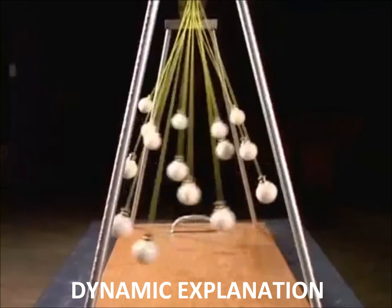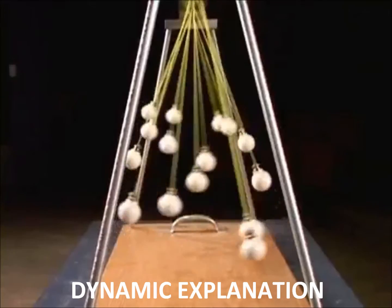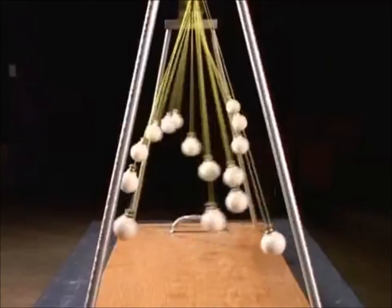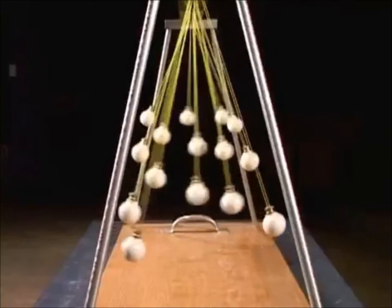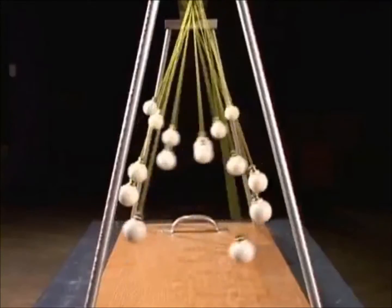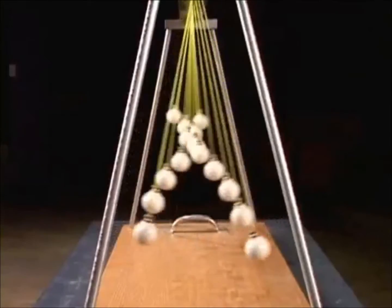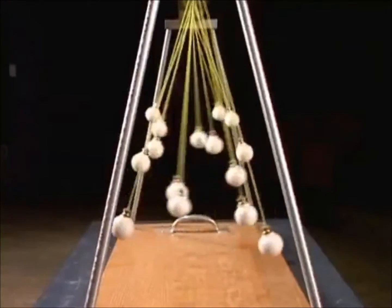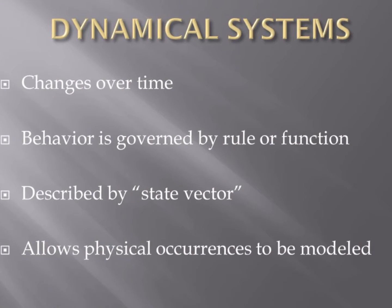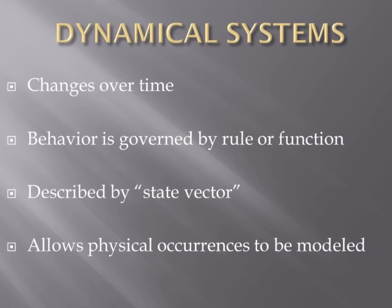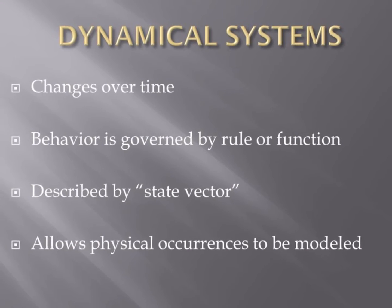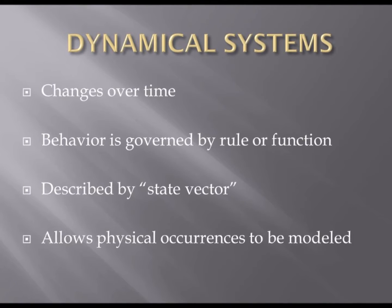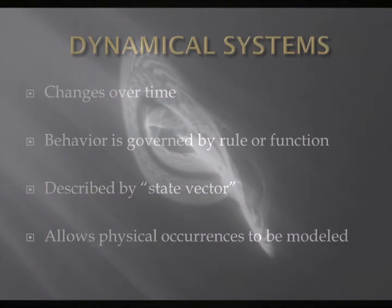A dynamical system may be described simply as any system that changes over time. The system may be described at any instant by a set of numbers known as a state vector. The system's behavior as it evolves is governed by a rule or function. Based on the initial state vector, the function may be used to determine the state of the system at subsequent instances in time. This quantitative approach to describing the state of a system is very useful as it allows the behavior of many physical occurrences to be represented mathematically.